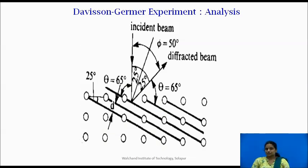Now this figure shows the atomic planes and the incident and scattered beams. The interplanar spacing is obtained from X-ray diffraction and it is to be d is equal to 0.91 angstrom unit. From figure it is seen that the glancing angle theta is equal to 65 degree.